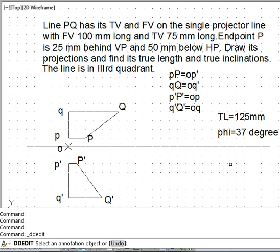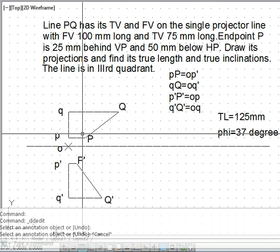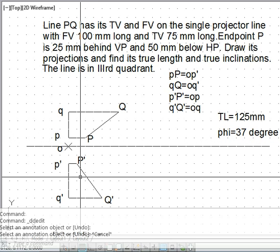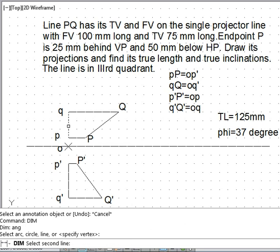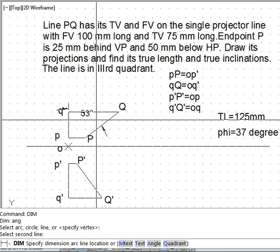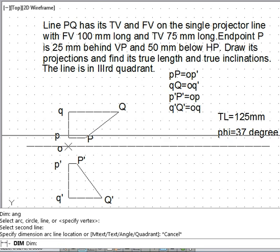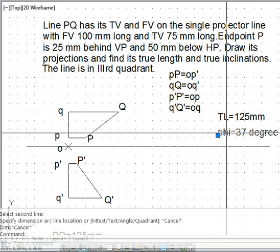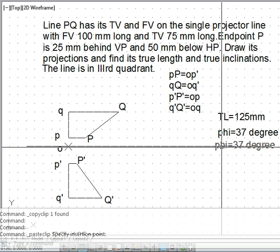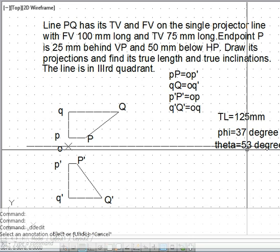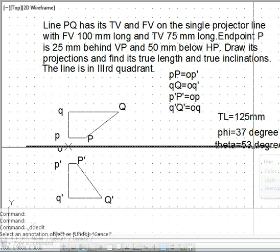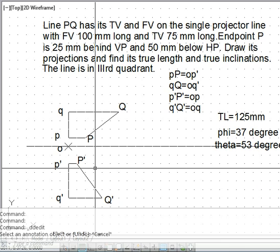And what about the theta? Theta is the angle made by PQ with the vertical and that is 53. So the angle theta you can see is 53. One thing you note in such problems, always the addition of phi and theta will be 90 degrees.